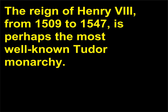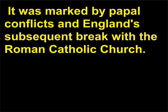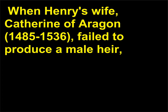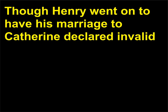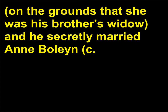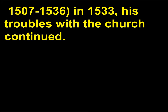The reign of Henry VIII, from 1509 to 1547, is perhaps the most well-known Tudor monarchy. It was marked by papal conflicts and England's subsequent break with the Roman Catholic Church. When Henry's wife, Catherine of Aragon, 1485–1536, failed to produce a male heir, he appealed to the Pope to grant him a divorce. The request was of course denied, though Henry went on to have his marriage to Catherine declared invalid on the grounds that she was his brother's widow, and he secretly married Anne Boleyn, c. 1507–1536, in 1533. His troubles with the church continued.